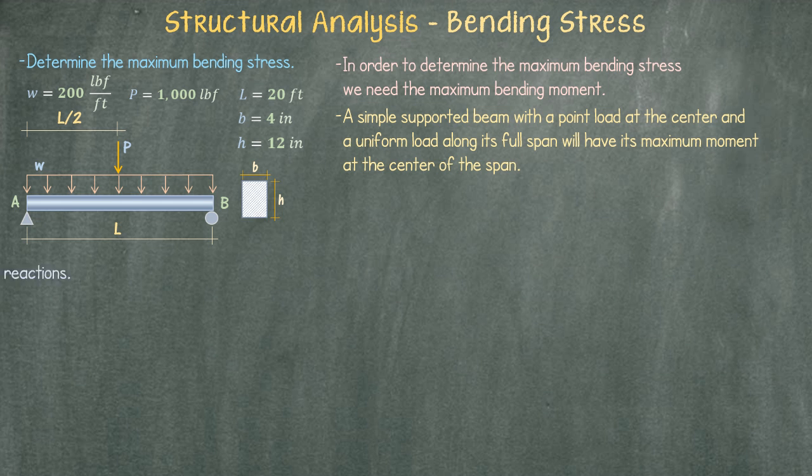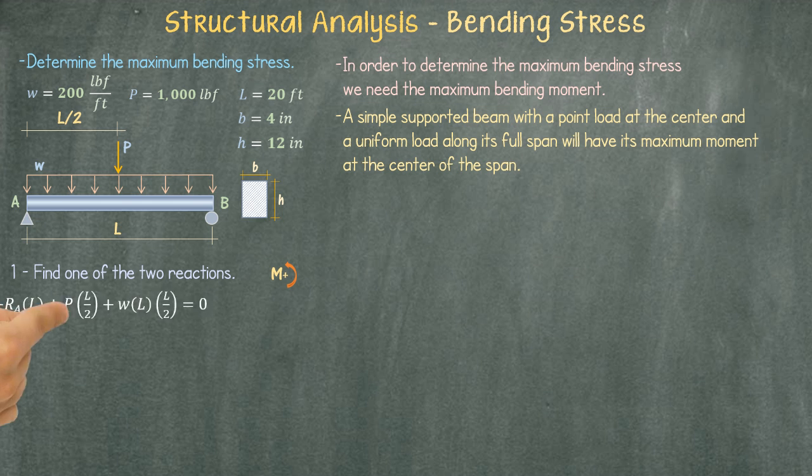First we need to determine the reaction at point A or B. I will pick to find the reaction at point A. We need to sum moments about point B. We're going to establish that our moments will be positive going counterclockwise. Our equation for sum of moments will look like this.